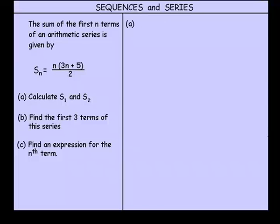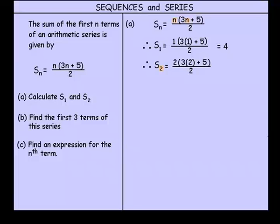Part A. Write down our formula that we're given. S of n equals n outside of 3n plus 5 all over 2. Therefore, S of 1 equals... Okay, in other words, what have we done? We just replaced n with 1. So if we do that, we come up with that. That simplifies to be 4. We're asked also to find S of 2. Exactly the same method. Where we see n, we're going to replace it with the number 2. And that simplifies to be 11. So part A is done. We found S of 1 and S of 2.